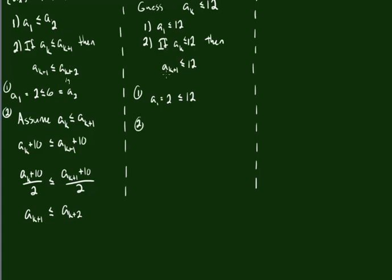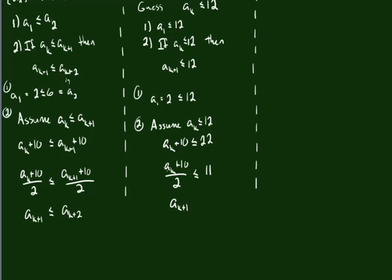Time for the second part. If a_k is less than or equal to 12, we need to prove that a_{k+1} is also less than or equal to 12. We're going to do the same process — we're basically going to be adding 10 to both sides and dividing by 2, just like we did on the other side. So we add 10 to both sides and divide by 2. This is going to let us know that a_{k+1} — because a_k + 10 all over 2 is a_{k+1} — so a_{k+1} is going to be less than or equal to 11, which happens to be less than or equal to 12. So we have proven that a_{k+1} is less than or equal to 12, and we know this thing is going to be bounded above by 12.